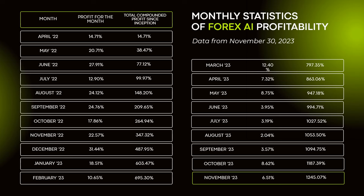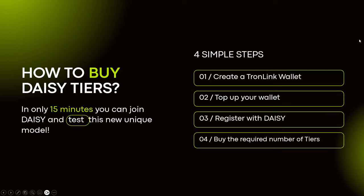Looking at the non-compounded monthly results, we had months with 14%, 20%, and the biggest month was 31% — though that was when the fund was still very small and the trading algos were very aggressive. Now, with a much larger fund, the algos became more conservative. We saw as low as 2% in August, but it's back up — September was 6.5% and October was 8.6%.